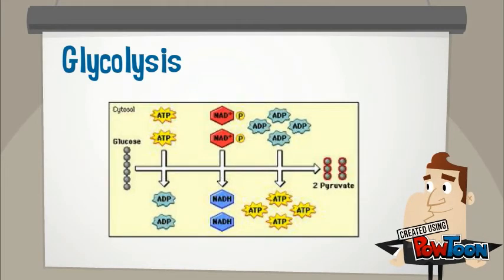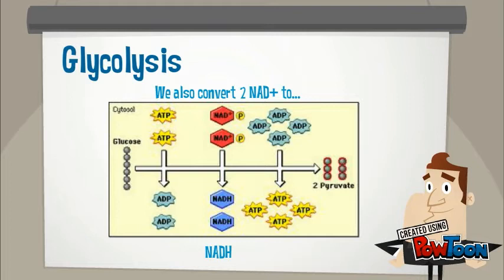During the process of glycolysis, we also use electron carriers, which, as the name implies, carry electrons. NAD+ gets electrons to become NADH, and those electrons can then be carried on to other parts of our process to get more energy.